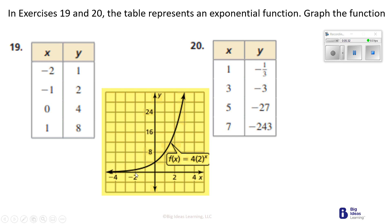When x is negative 2, y was 1 — everything's going up by 4s on the y-axis. When x is negative 1, y will be 2. When x is 0, y will be 4. And when x is 1, y will be 8. You see that curve that comes up. So the function of x is 4 times 2 to the x power.